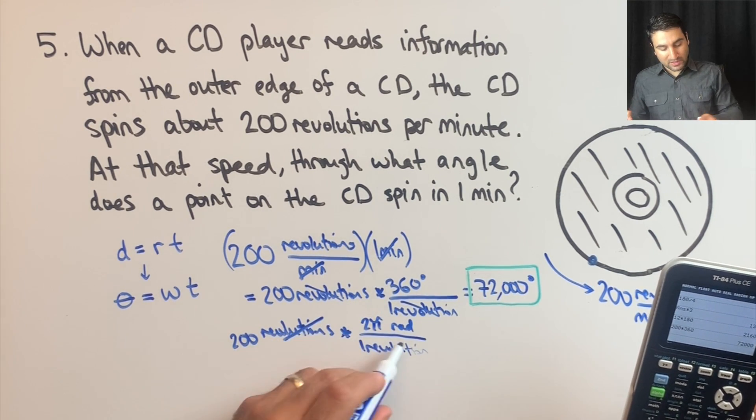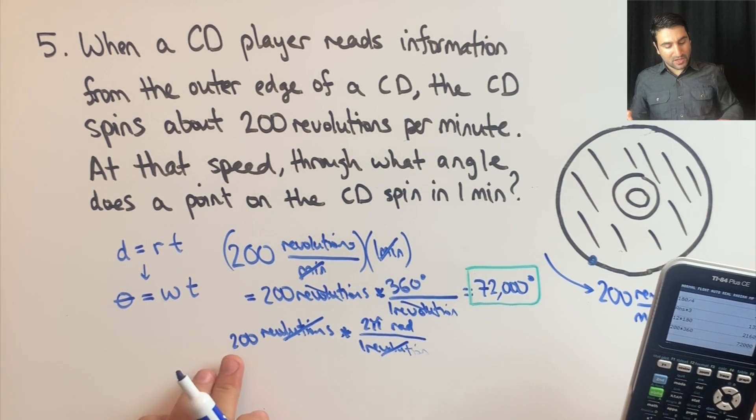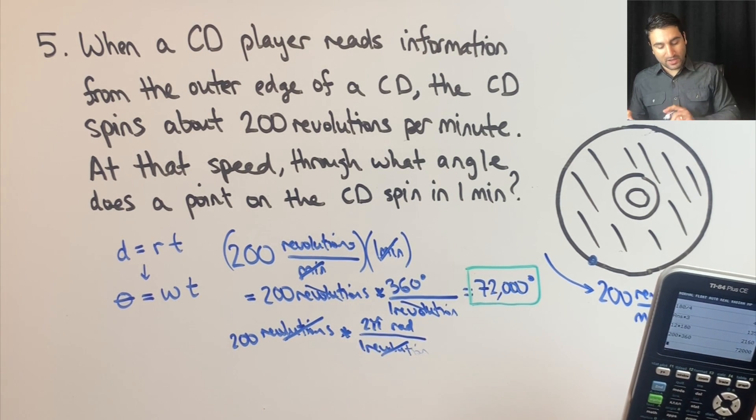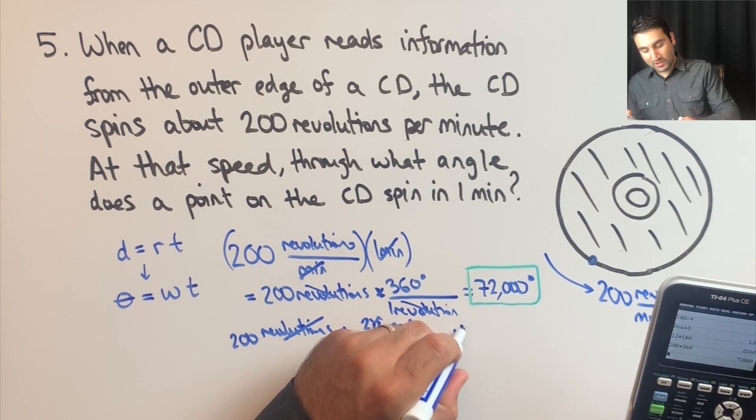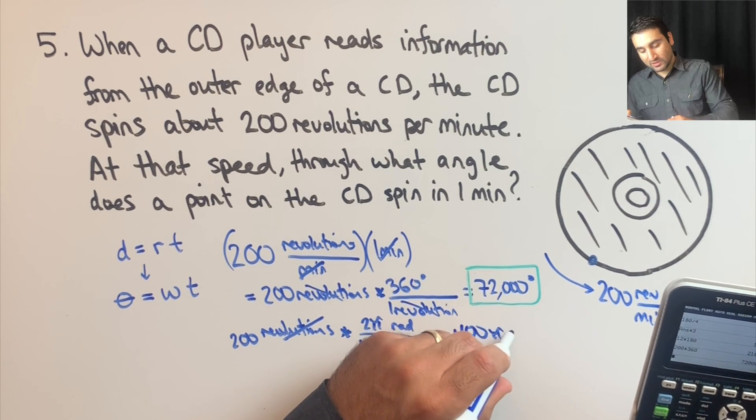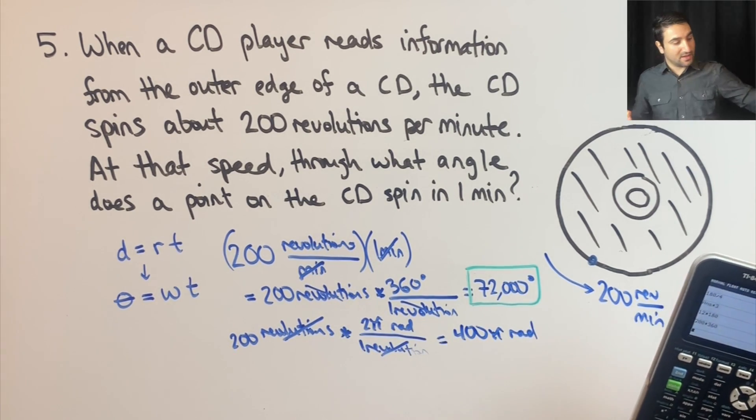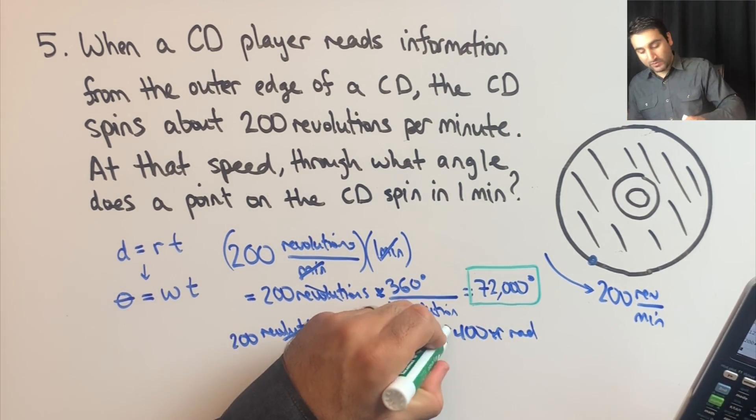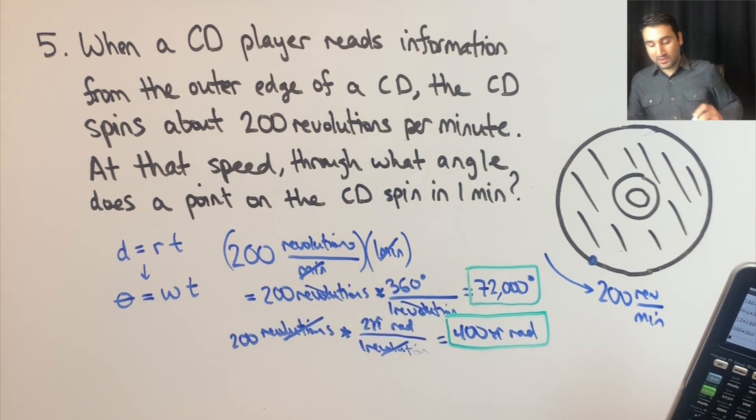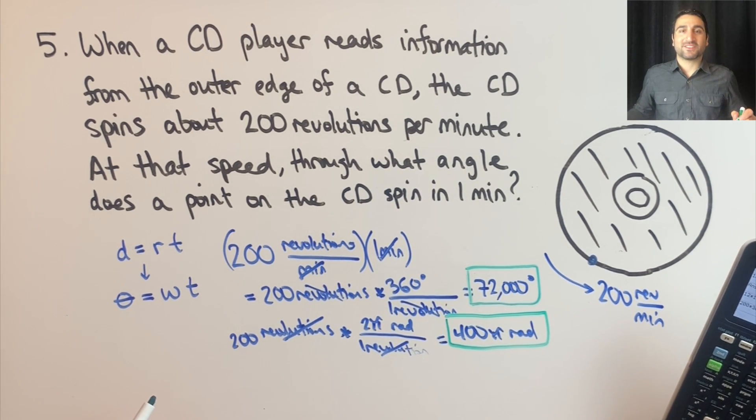So we would cancel out the revolutions, and you're left with 200 times two pi radians, which equals 400 pi radians. And that is the equivalent answer in radians. Great. See you in the next one.